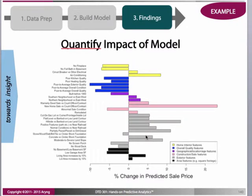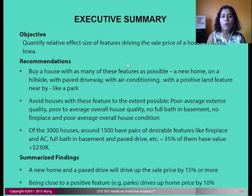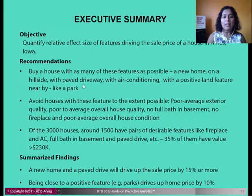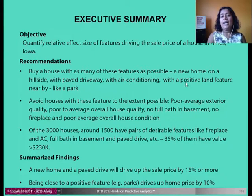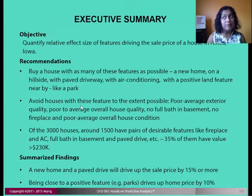Keeping in mind that new home sale has the highest impact, other powerful coefficients come from exterior features — for example, having a hillside contour versus any other land contour has almost a 15 percent impact on sale price. Going back to our Ames, Iowa housing price model objective — to quantify relative effect size of features driving sale price — we recommend buying a house that is new, on a hillside, with a paved drive, air conditioning, and positive land features like a park. Features to avoid include poor to average exterior quality, poor to average overall house quality, no full bath in the basement, no fireplace, and poor to average overall house condition.